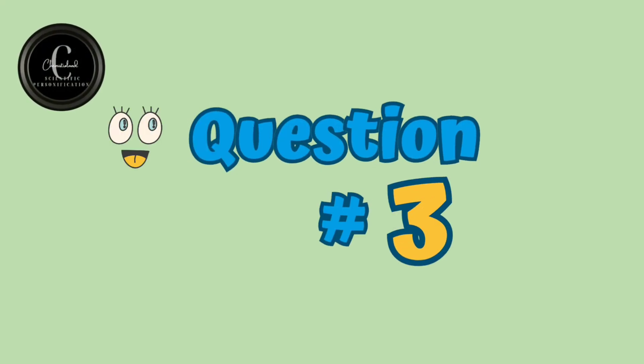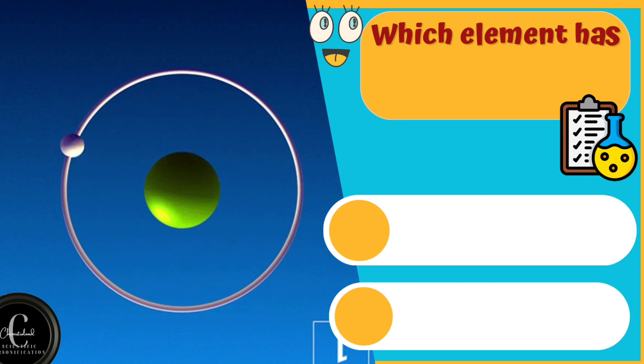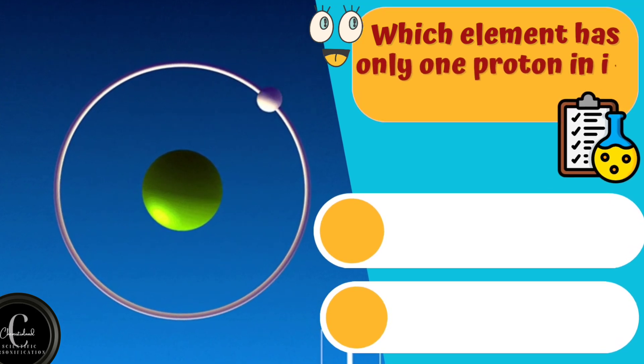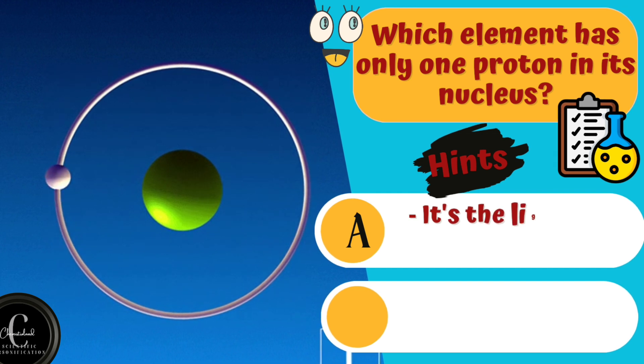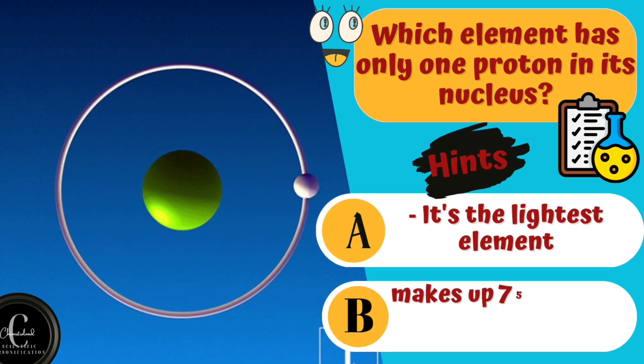Let's try question number three. Which element has only one proton in its nucleus? Hints are A. It's the lightest element. B. Makes up 75% of the elemental mass of the universe.